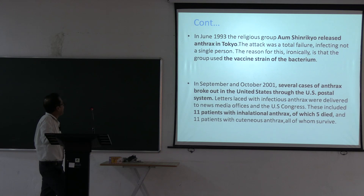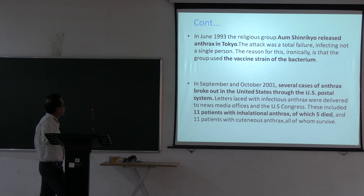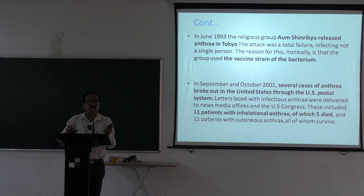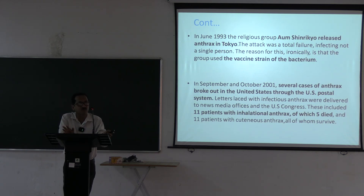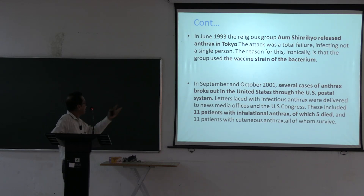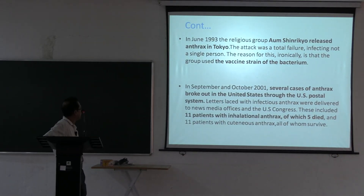In June 1993, the Japanese religious group Aum Shinrikyo released anthrax in Tokyo. The attack was a total failure because they used the vaccine strain, which has reduced pathogenicity. In September and October 2001, several cases of anthrax broke out in the United States through the US postal system.